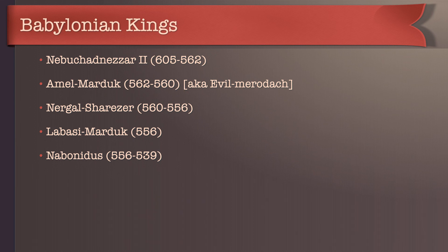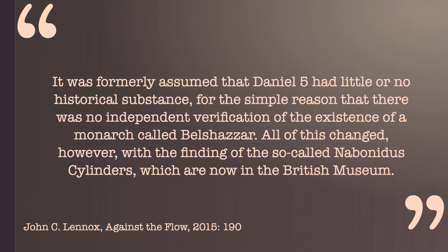For many years it was thought by many scholars that Belshazzar never existed — he was fiction because there were no historical references to him in the annals of Babylon. If you read a commentary before 1900, there's a good chance they will take this particular position. John Lennox wrote: 'It was formerly assumed that Daniel 5 had little or no historical substance, for the simple reason that there was no independent verification of the existence of a monarch called Belshazzar.' All of this changed, however, with the finding of the so-called Nabonidus cylinders, which are now in the British Museum. We now know a lot more about Belshazzar thanks to the archaeological discoveries.